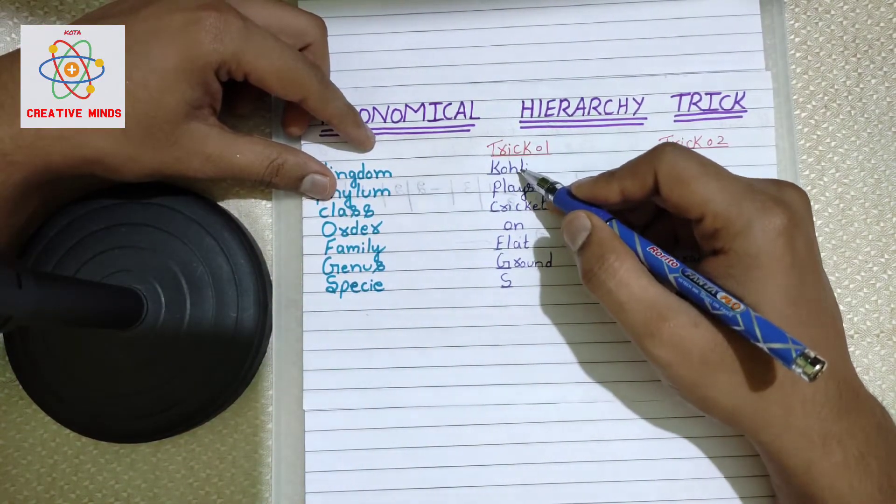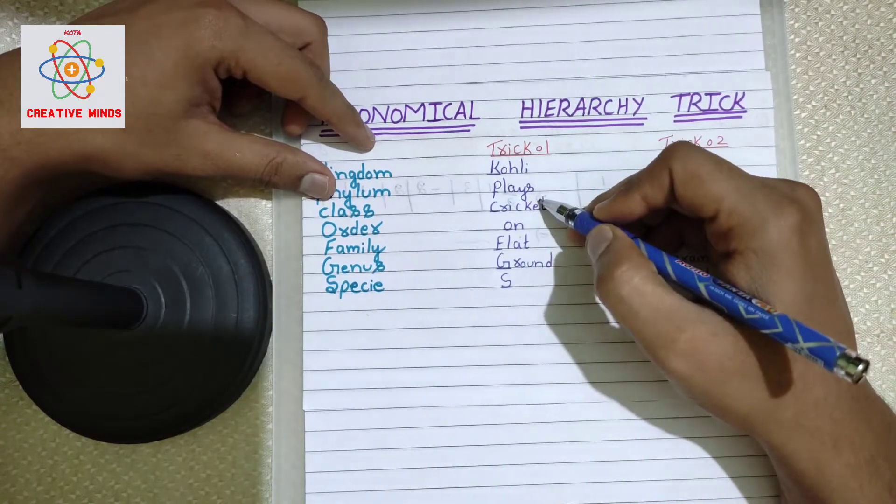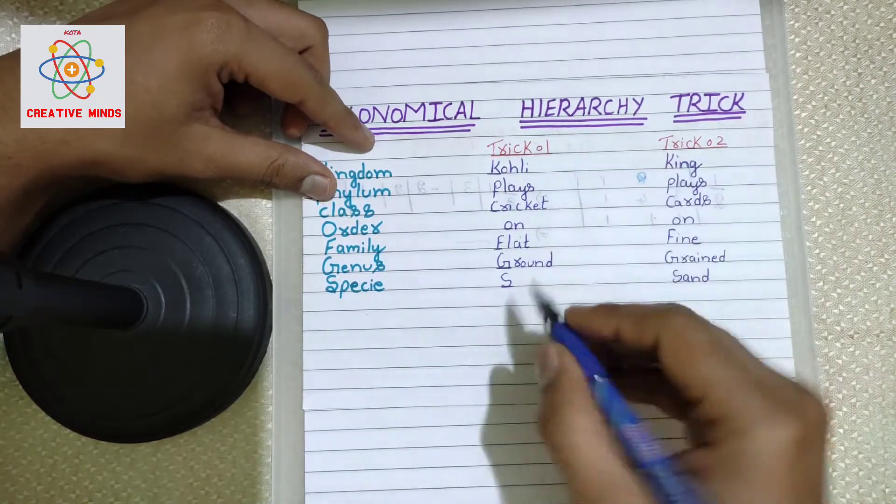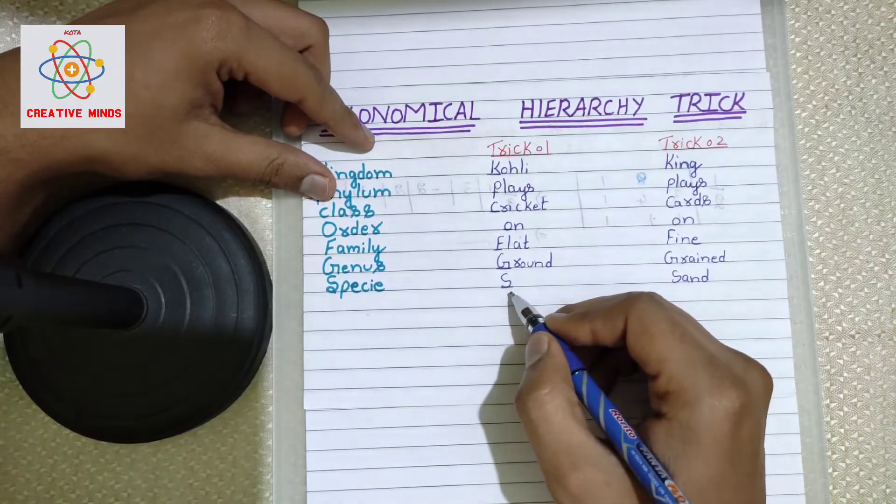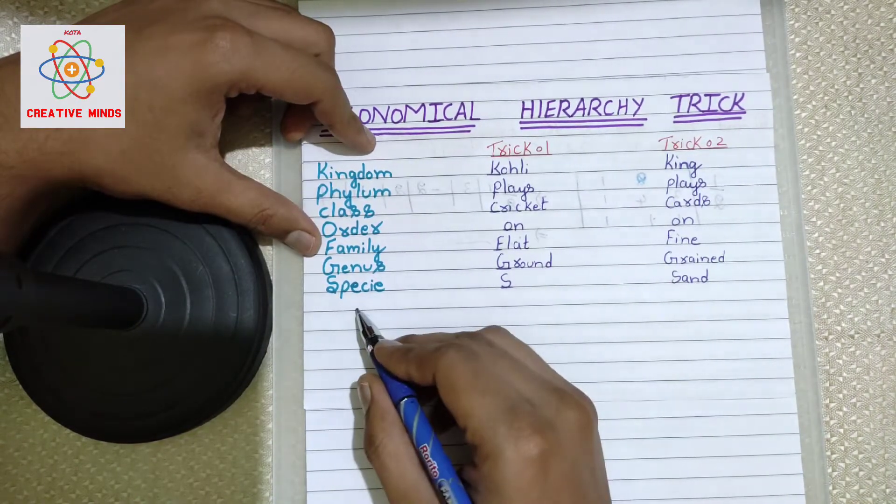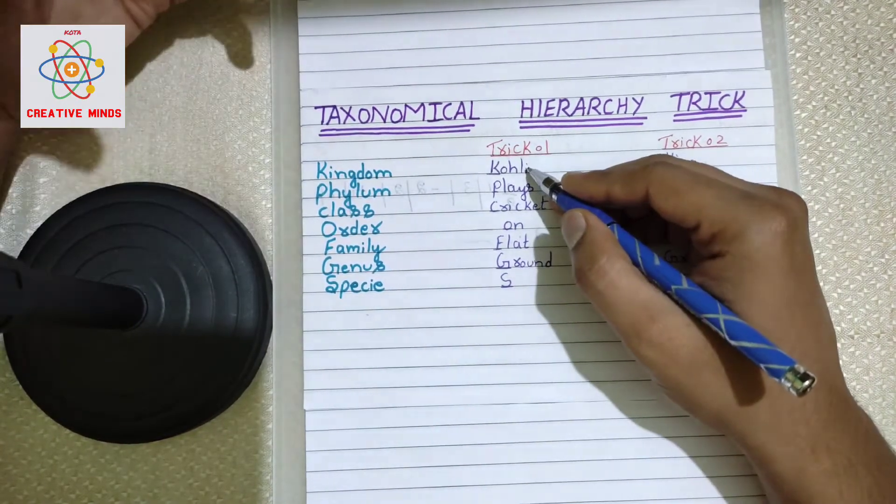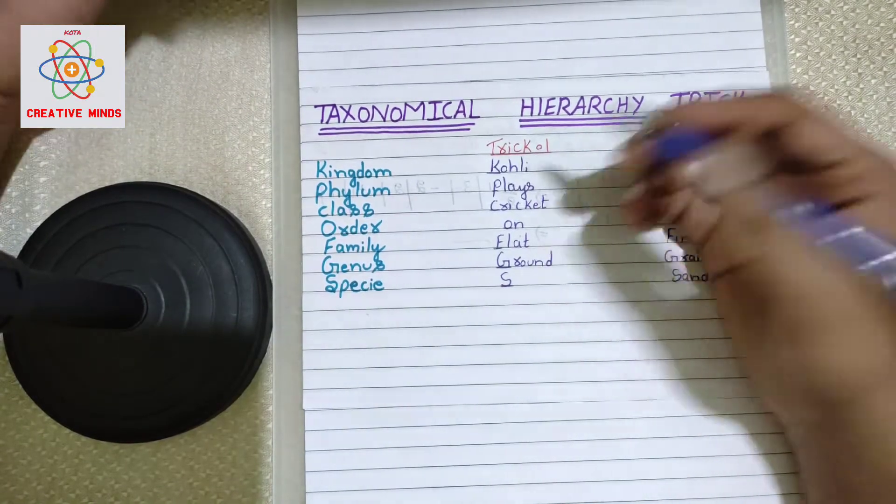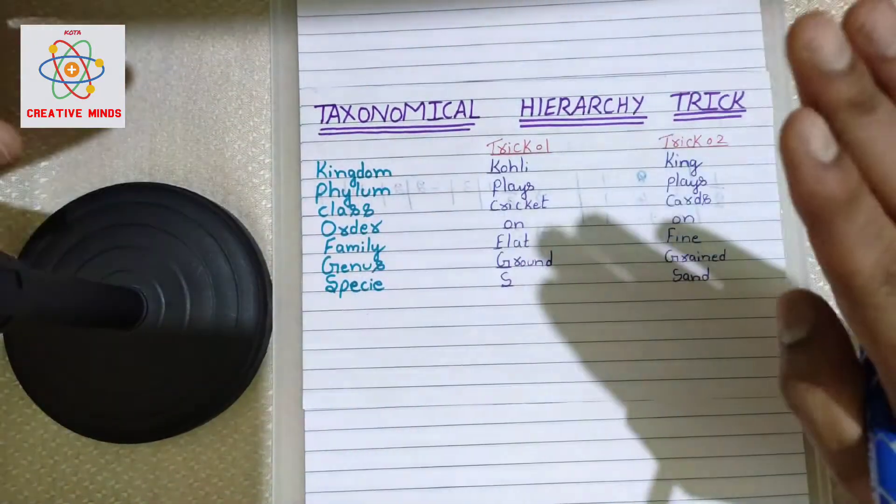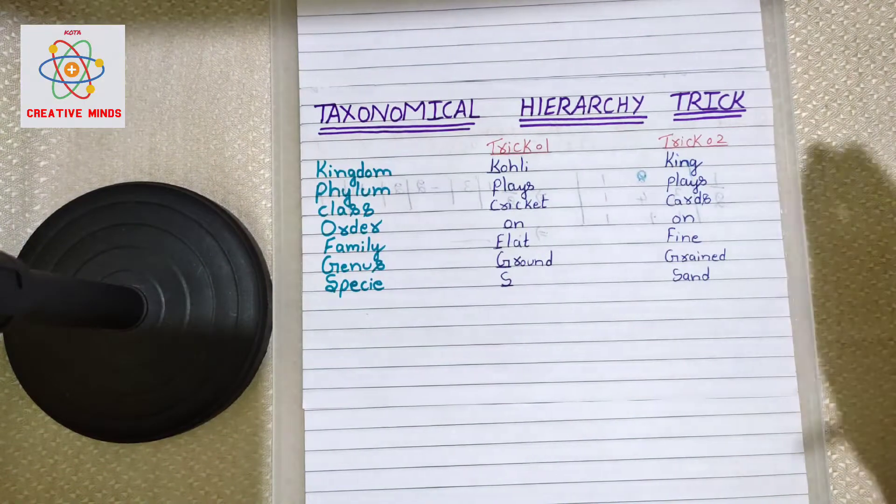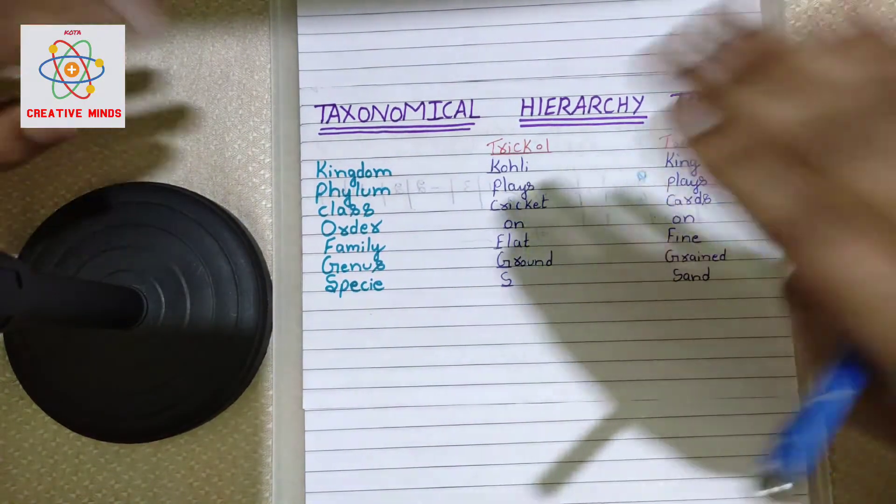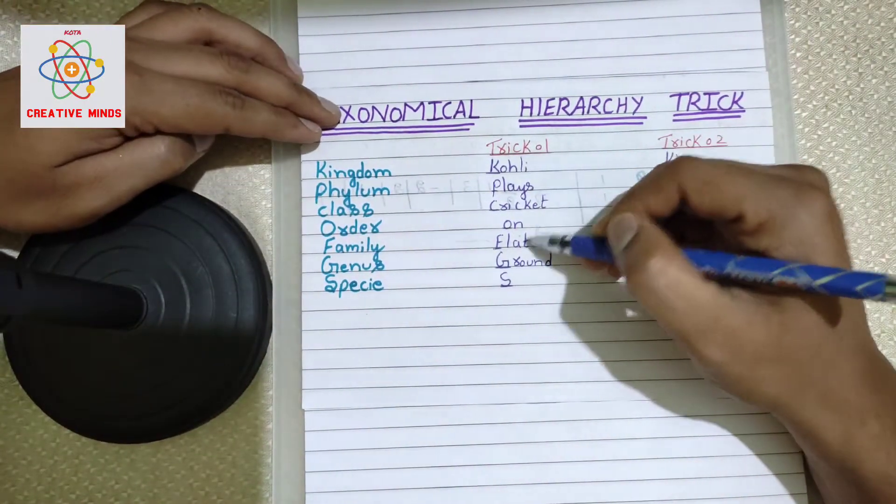He's a very famous cricket player. Koly plays cricket on flat grounds. Yes, I have written this at the bottom to support the species. Koly is a famous cricketer, and he plays cricket on flat grounds. He doesn't play on hills or mountains - usually we see him playing on flat ground. So: Koly plays cricket on flat grounds.